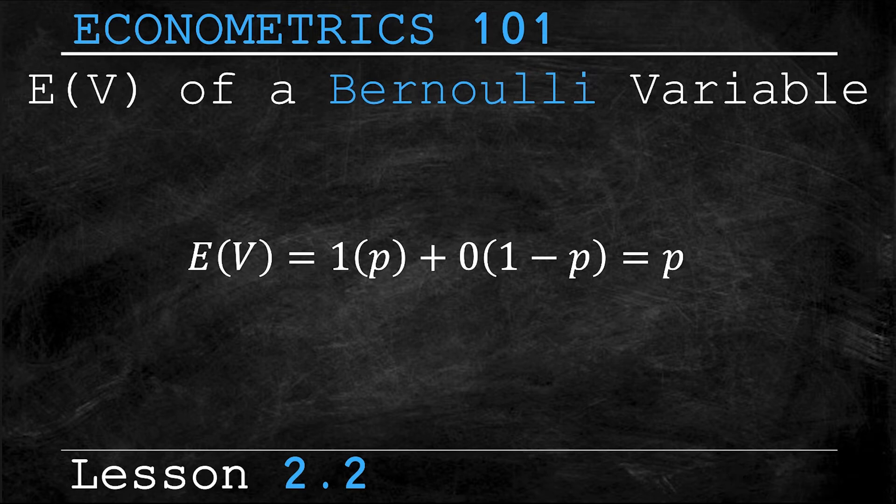This simplifies to p, which implies that the expected value of a Bernoulli random variable is just p. See, told you it was that easy.